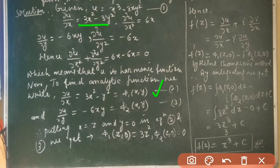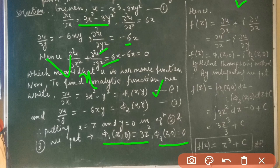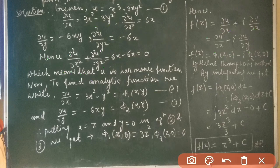Putting x = z and y = 0 in equations (2) and (3), we get φ₁(z, 0) = 3z² and φ₂(z, 0) = 0. To find the analytic function we use the Milne-Thomson method: f'(z) = ∂u/∂x + i·∂v/∂x, which by the Cauchy-Riemann equations becomes f'(z) = φ₁(z, 0) - i·φ₂(z, 0).